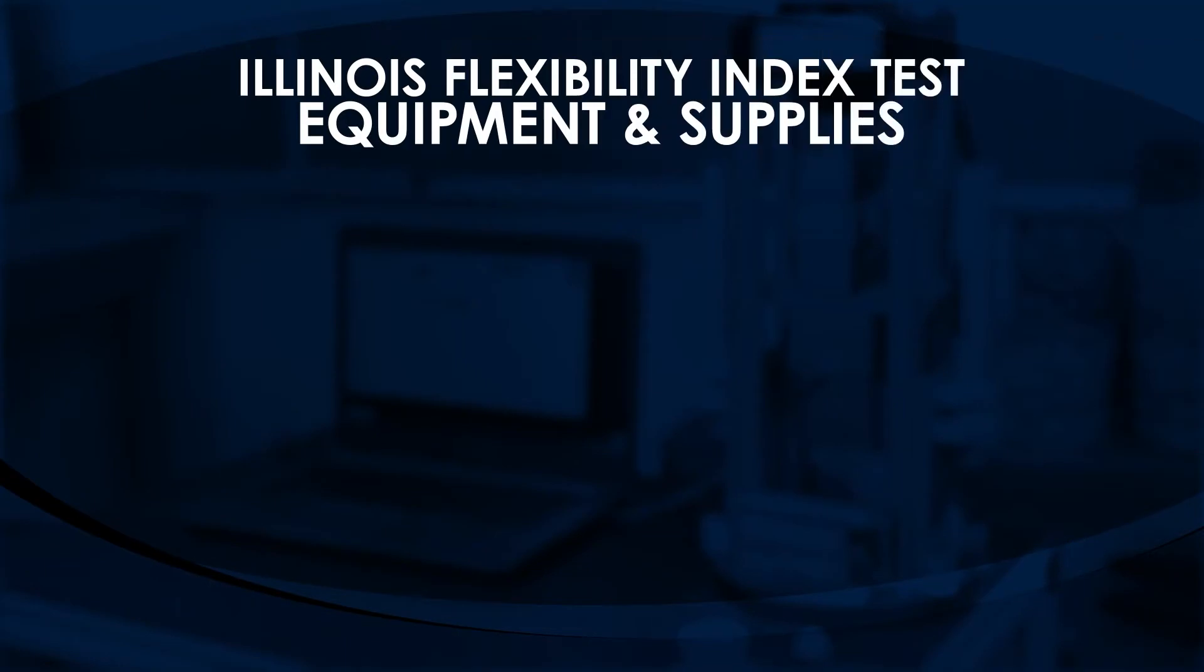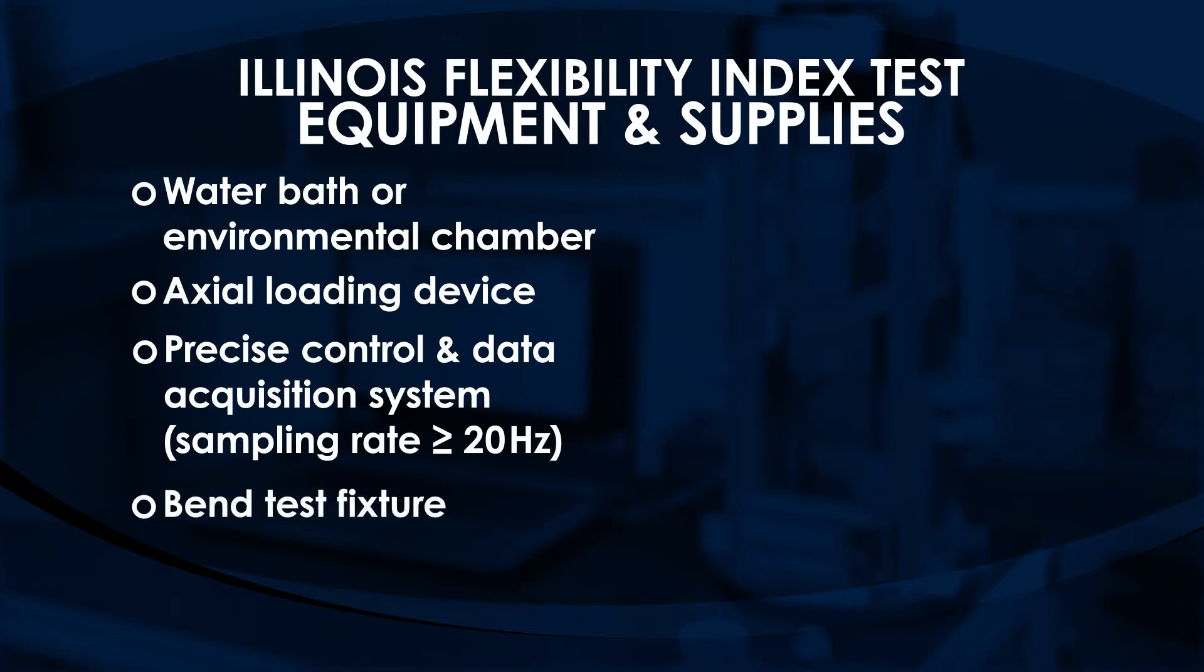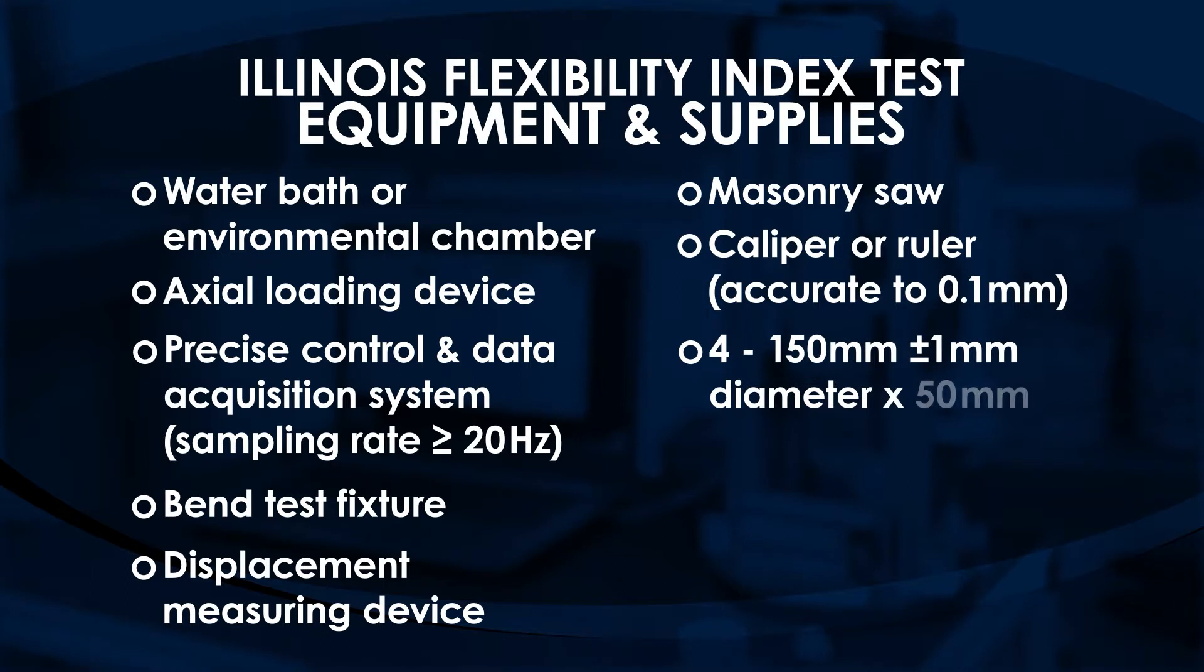Equipment and supplies for this test include: water bath or environmental chamber capable of maintaining specimen temperature, axial loading device, precise control and data acquisition system with a sampling rate of 20 hertz or more, bend test fixture, displacement measuring device meeting precision and resolution requirements, masonry saw, a caliper or ruler accurate to 0.1 millimeters, and four 150 millimeter diameter by 50 millimeter thick test specimens.